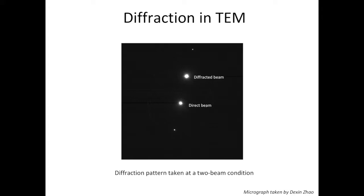In experiments, it's nearly impossible to have the perfect two-beam condition, so you always see some dimmer spots, but they will not significantly affect our analysis. Now you should have a pretty good understanding of what is a two-beam condition.